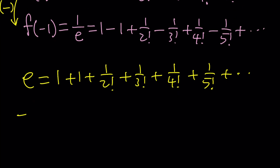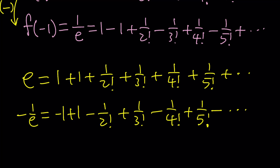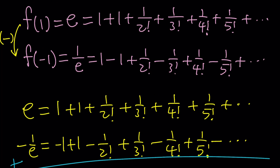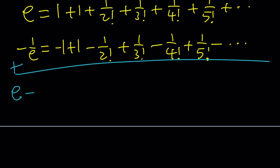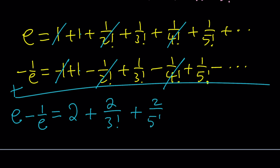Here's what we're going to do instead: subtract the equations. Negate the bottom term. So e equals 1 plus 1 plus 1 over 2 factorial plus 1 over 3 factorial plus 1 over 4 factorial plus 1 over 5 factorial, and so on. Then negative 1 over e equals negative 1 plus 1 minus 1 over 2 factorial plus 1 over 3 factorial minus 1 over 4 factorial, and so on. Notice the terms alternate with different signs. On the left-hand side we have e minus 1 over e, and the even terms cancel out, giving us 2 plus 2 over 3 factorial plus 2 over 5 factorial plus 2 over 7 factorial.